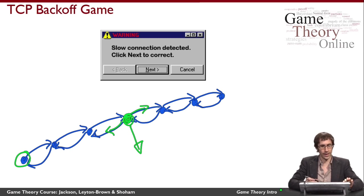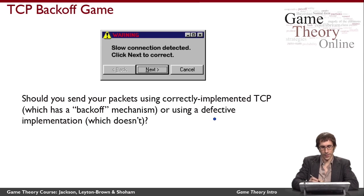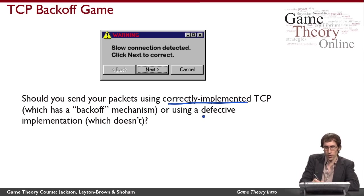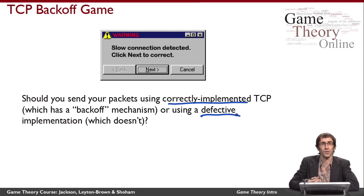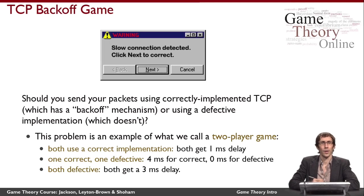That's all you need to know about the backoff mechanism. I'd like to think about the strategic problem you face in deciding whether to install this somewhat suspicious-looking piece of software. Should you send your packets using a correctly implemented version of the TCP protocol, which does have the backoff mechanism? Or should you run this program and instead use a defective implementation, which disables the backoff mechanism and just blasts the network all the time without any concern for the congestion it will cause? Problems like this one are what game theorists call games.